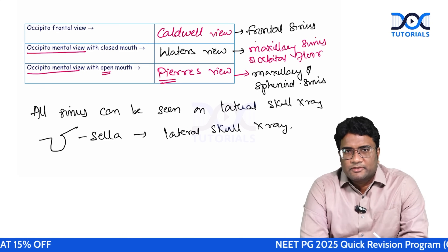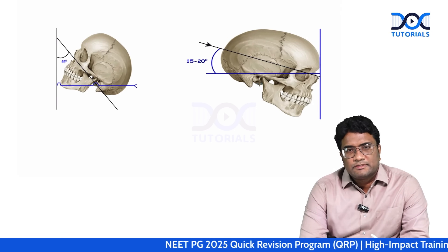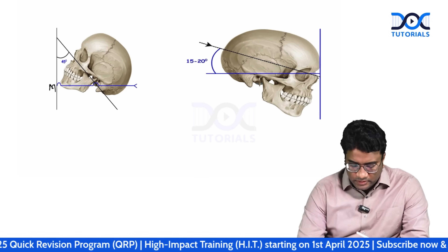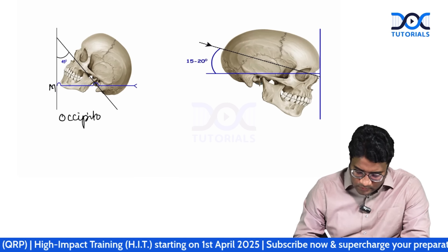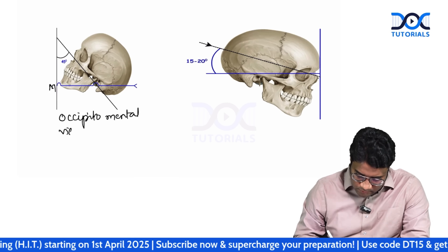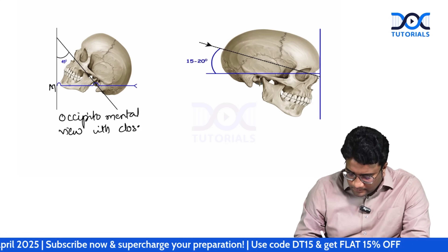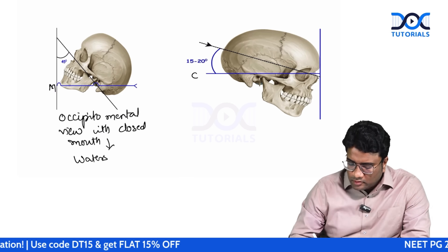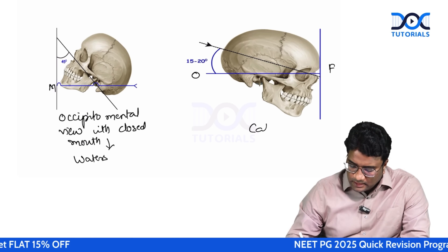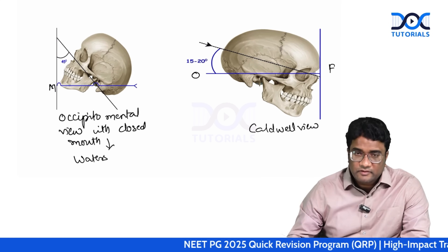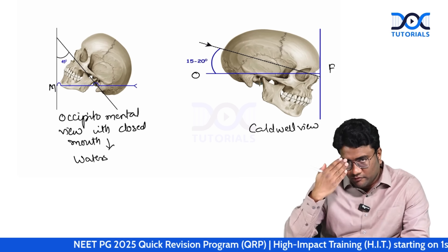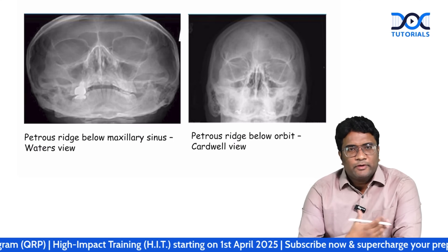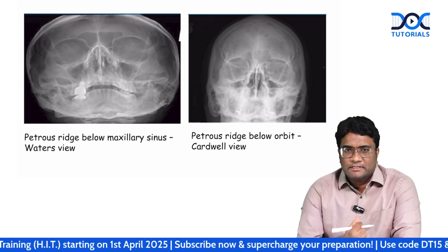Looking at this lateral skull x-ray and this positioning — the chin, the mentum, is touching the film. So this is the occipitomental view with a closed mouth — this is how you have your Waters view. In the occipitofrontal view, the frontal bone is touching the film — that is the Caldwell view.